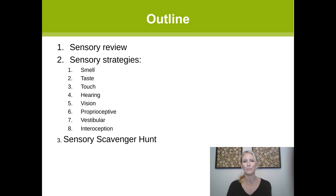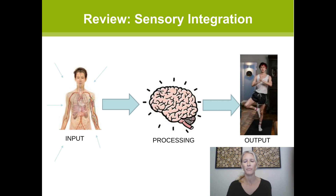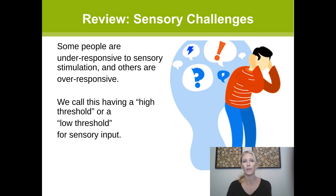In our previous webinars, we discussed the process of sensory integration, where we take input from the outside world, process, organize and interpret this information in our brain, and then respond with an action or output — also referred to as sensory processing. We talked about what it looks like when someone has difficulty with sensory processing. Some people might be over-responsive to certain stimulation and others are under-responsive. Under-responsive means they have a big cup and need a lot of input — a high threshold. Over-responsive means they have a small cup that easily overflows — a low threshold.